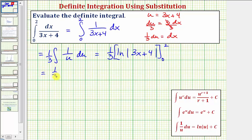So we'd have one third times the quantity: when x is two, we'd have natural log absolute value of six plus four, ten. The absolute value of ten is ten, so we just have natural log ten. Minus, when x is zero, we have natural log absolute value of four. The absolute value of four is four, so we have natural log four.